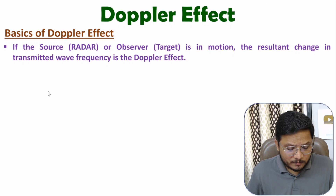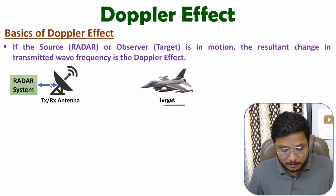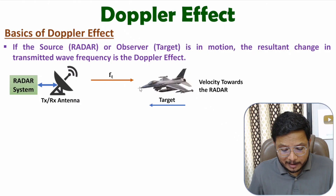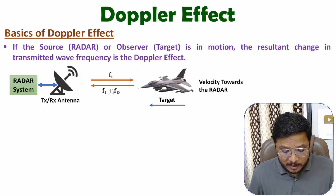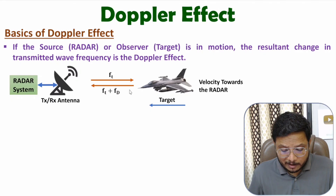Let us assume we have a radar system and the target is moving towards the radar system. If the radar is transmitting at frequency Ft, the echo signal will have frequency Ft plus Fd. Based on this frequency deviation, the radar can identify the velocity of the target and can also determine that this target is moving towards the radar.